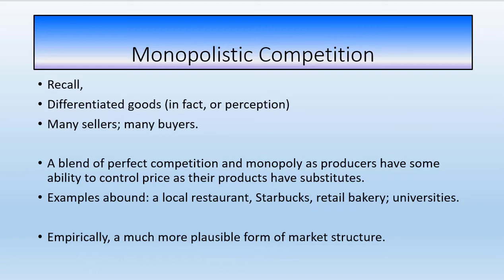With monopolistic competition there are differentiated goods — either differentiated in fact, where there truly are differences, or just by perception. That's where advertising comes in later: advertising can change perceptions even if the products themselves are the same. We have differentiated goods, which starts moving us towards monopoly because we're not looking at a commodity like with perfect competition. And with monopolistic competition we'll have many sellers, which sounds a lot like perfect competition.